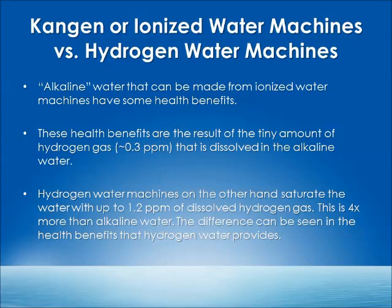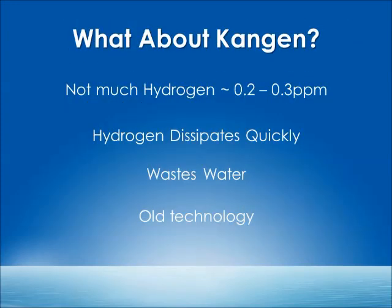We have a hydrogen water machine that can saturate water with up to 1.2 parts per million of dissolved hydrogen gas — up to four times more than alkaline water. The hydrogen stays in the water for long periods: it has a half-life of every 12 hours, so at 12 hours you'll see 0.6 ppm, and another 12 hours later about 0.3 ppm — but the level of saturation is very high. By comparison, Kangen water has only 0.2 to 0.3 ppm, the hydrogen dissipates very quickly, you must drink it immediately after processing, and the machine wastes water. It is very old technology.